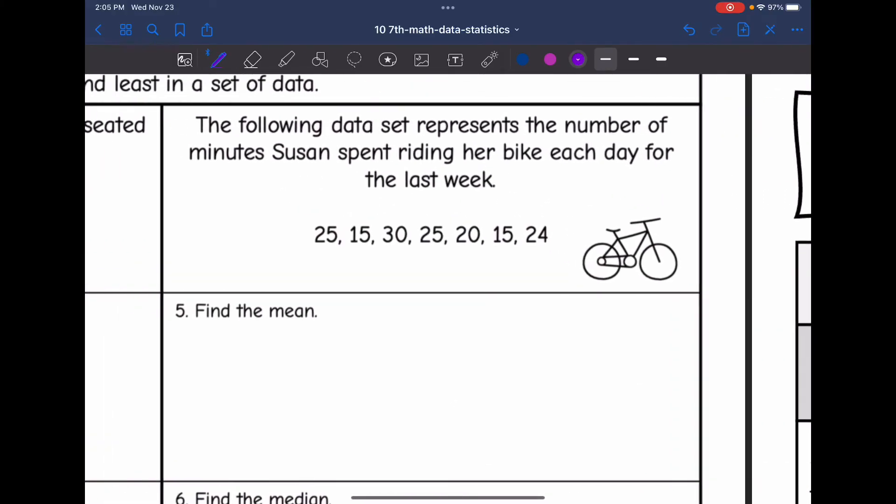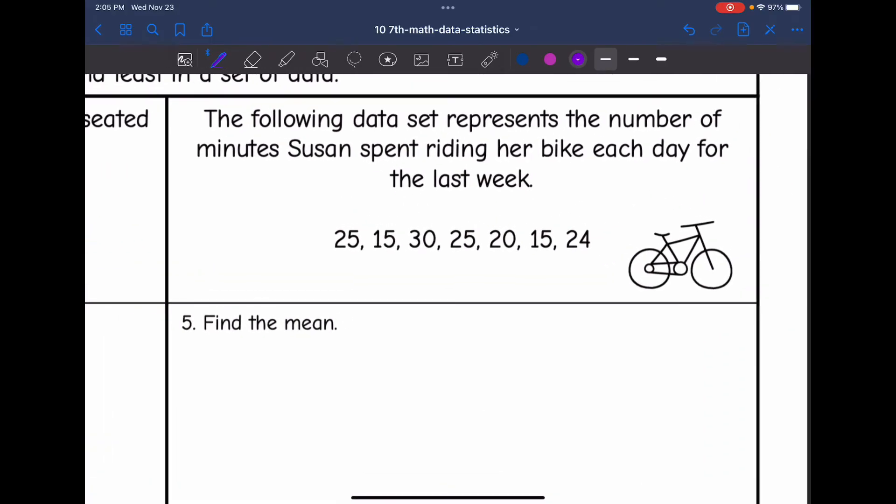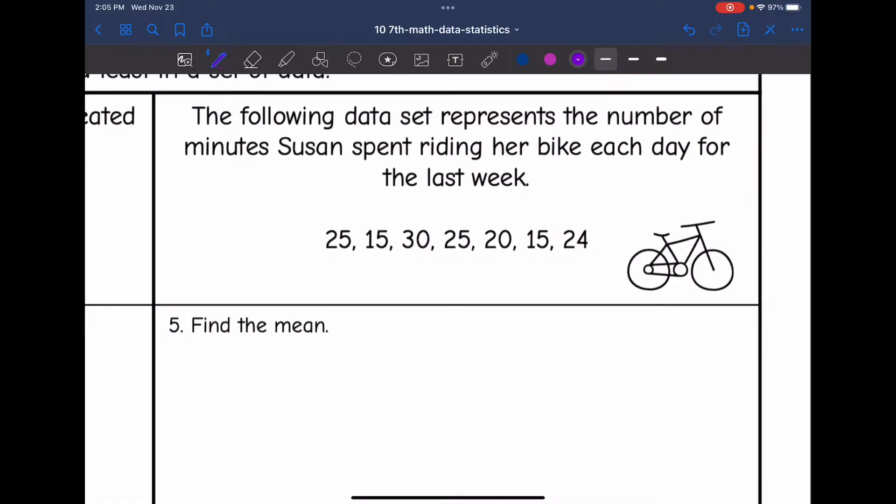Let's look at our next set of data. It says the following data set represents the number of minutes Susan spent riding her bike each day for the last week. So the first thing they want us to find is the mean. So I'm going to add these numbers together.